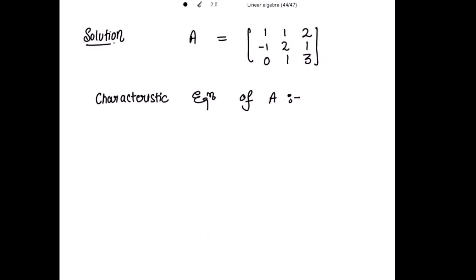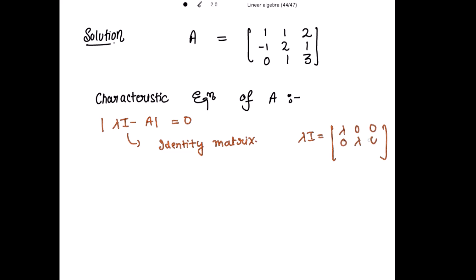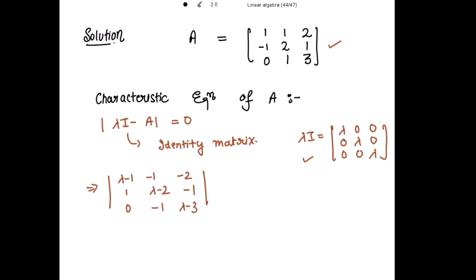First we are going to find the eigenvalues. For that, we write the characteristic equation of A, which is the determinant of lambda I minus A equals 0, where I is the 3x3 identity matrix. Lambda I gives us the diagonal matrix with lambda on the main diagonal. Subtracting A, we get the determinant of the matrix with entries: (lambda-1), -1, -2 in the first row; 1, (lambda-2), -1 in the second; and 0, -1, (lambda-3) in the third, equal to 0.